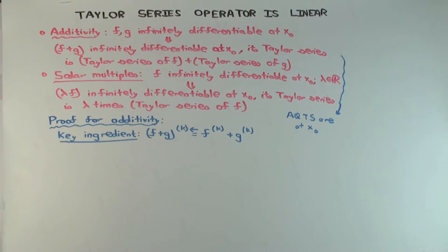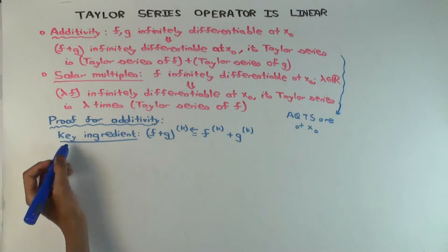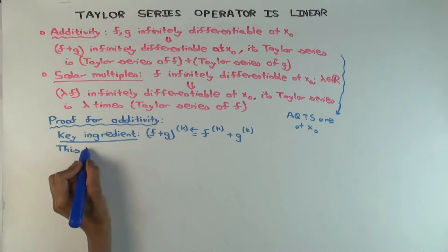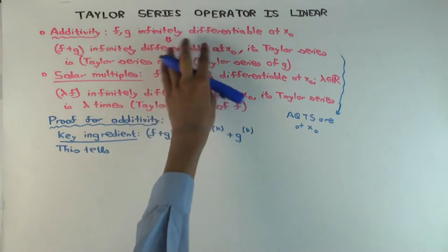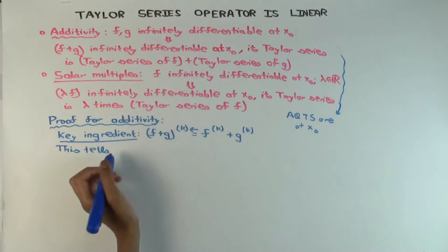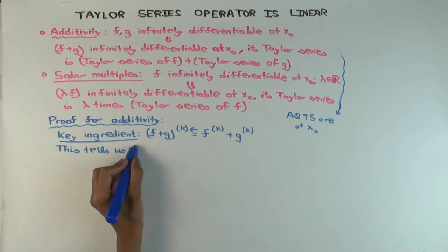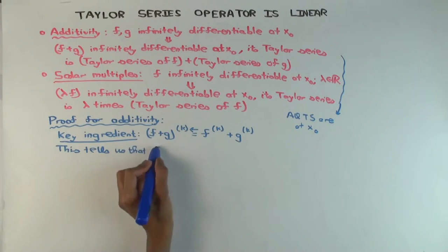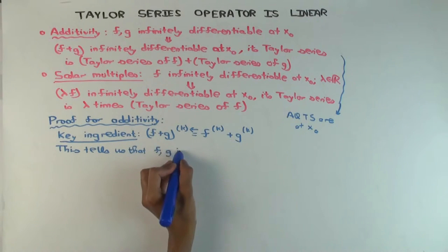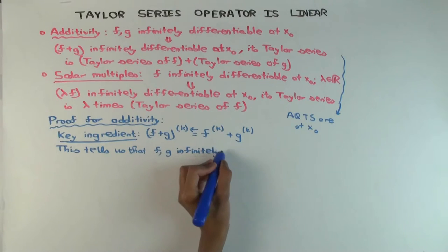Okay, so how does that help us? Well, first of all, this tells us that if f and g are infinitely differentiable, so is f plus g, right? So that covers the first part of it, which just says yes, the sum is infinitely differentiable. Do you see that? Explain that. If f and g are infinitely differentiable, why should the sum be infinitely differentiable?